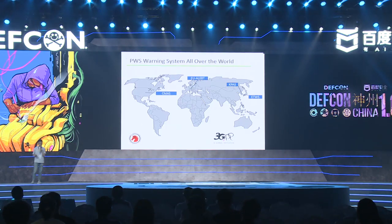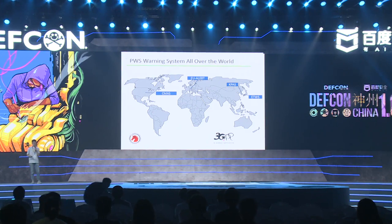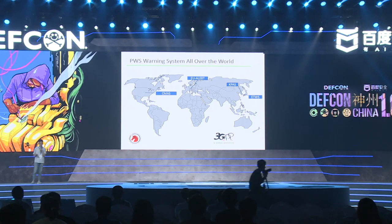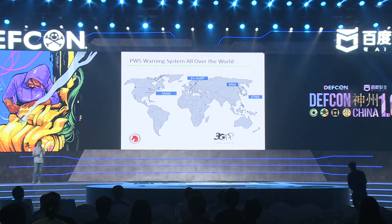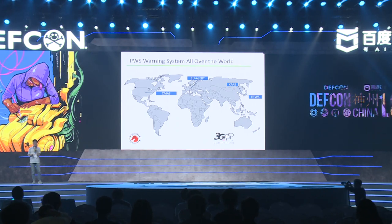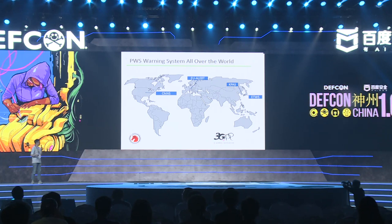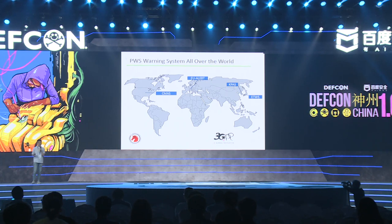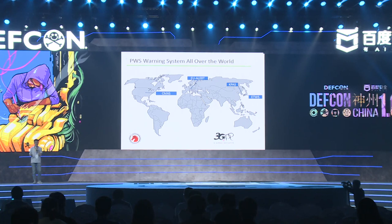There are four kinds of public warning systems around the world. ETWS, the Earthquake and Tsunami Warning System, is used for Japan. CMAS, the Commercial Mobile Alert System, is used for the USA. KPS is for South Korea, and EU-Alert is used for European countries. Although there are four kinds, they share the same architecture and common signaling procedure.